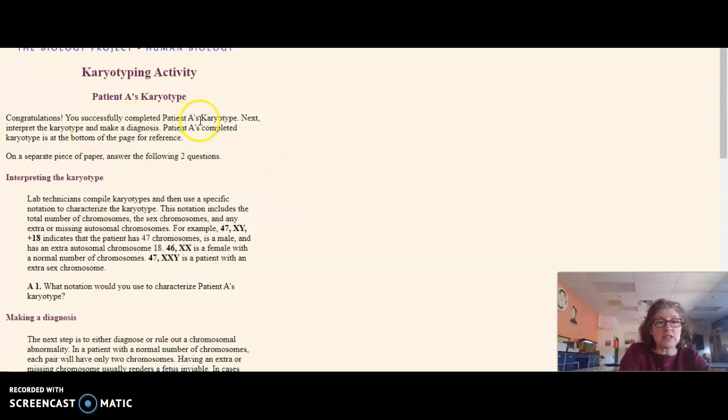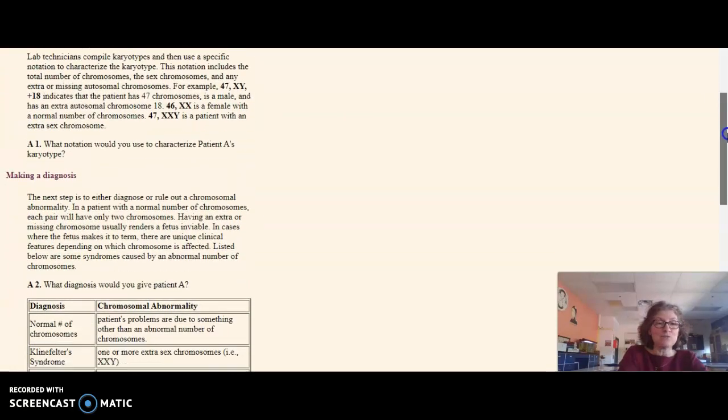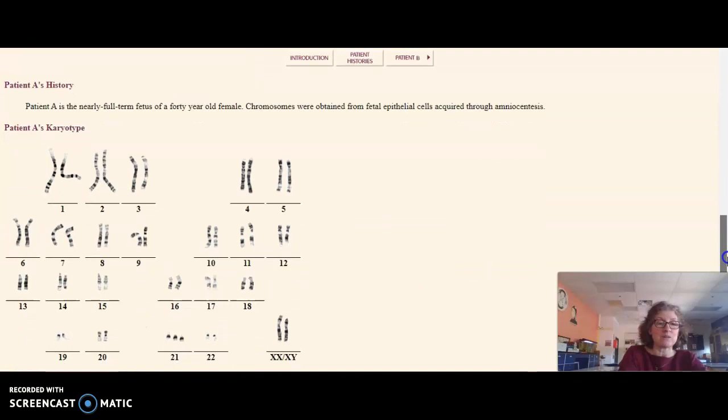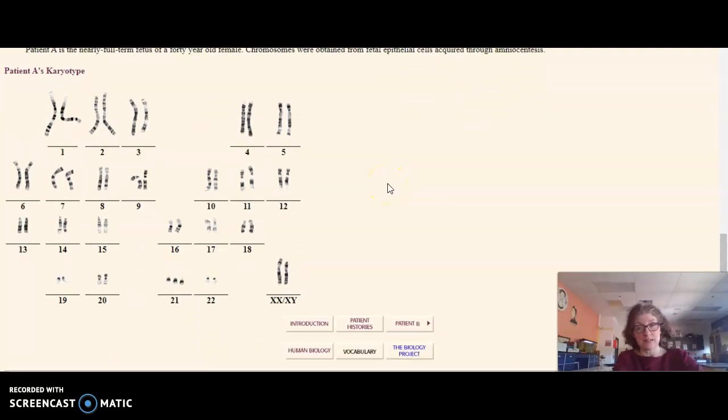You successfully completed patient A's karyotype. Now you need to interpret the karyotype and make a diagnosis, but what they don't tell you is you need to scroll down to find your finished karyotype. Here it is. Maybe you couldn't see that before, so I wanted to make sure you saw that now.